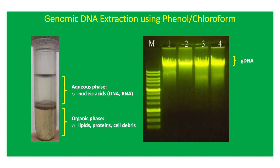Conventional method of genomic DNA (gDNA) extraction using phenol-chloroform utilizes detergents such as sodium dodecyl sulfate (SDS) or cetyltrimethylammonium bromide (CTAB) for cell lysis. After cell lysis, phenol-chloroform-isoamyl alcohol is added to separate lipids and other proteins into the organic phase and the gDNA into the aqueous phase.